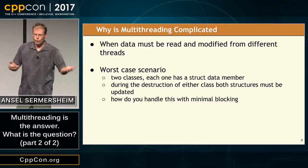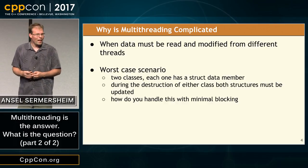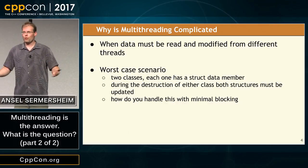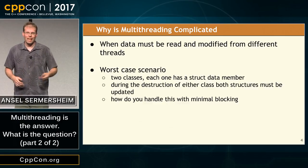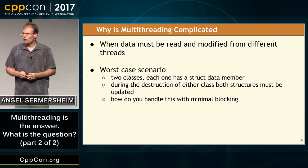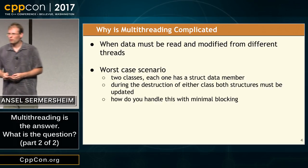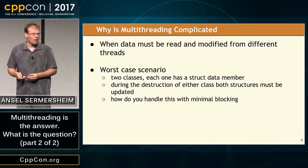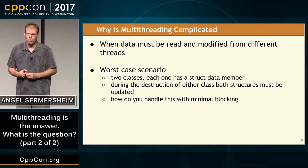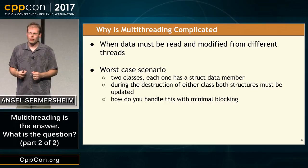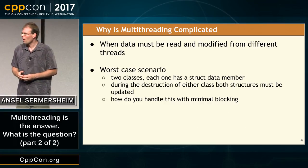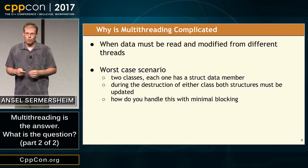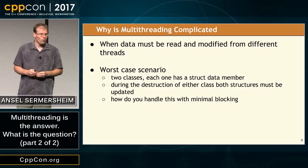If you have two separate classes, each with data, and in each of the destructors you need to update data in the other object, those of you who have done multi-threading will recognize that this doesn't sound so happy — you can see deadlocks on the horizon and all sorts of places for things to go horrifically wrong. How do we handle this with minimal blocking? This is where I started the design of LibGuarded. This is why LibGuarded exists — to solve this exact problem.